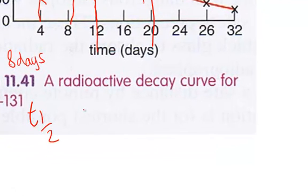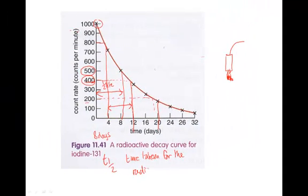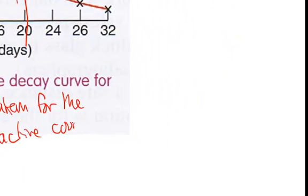So the half-life, which we call t-half, is the time taken for the radioactive count to decrease by half.